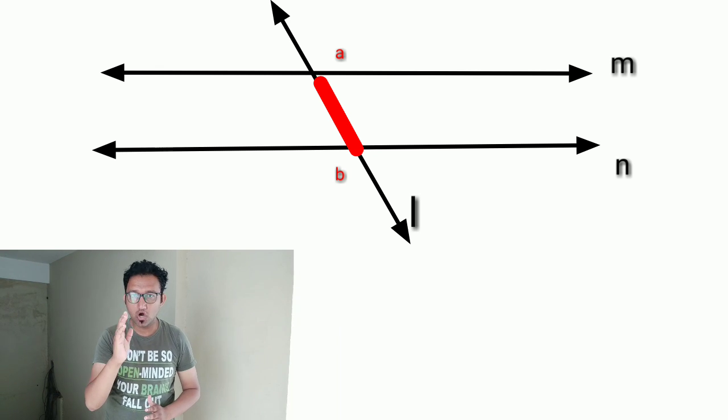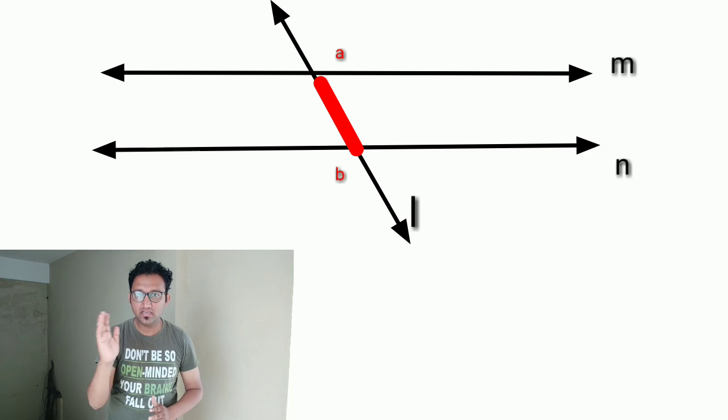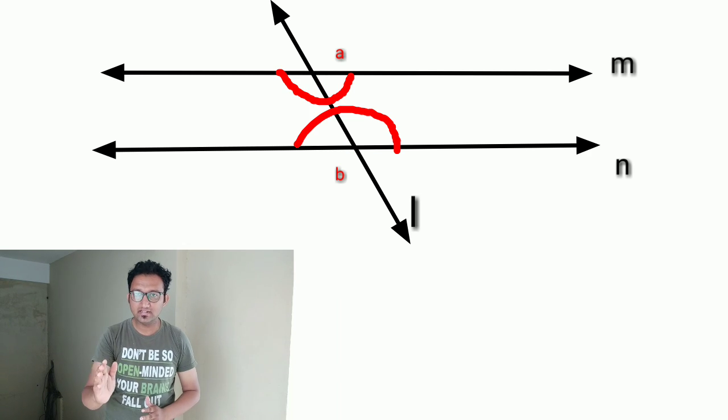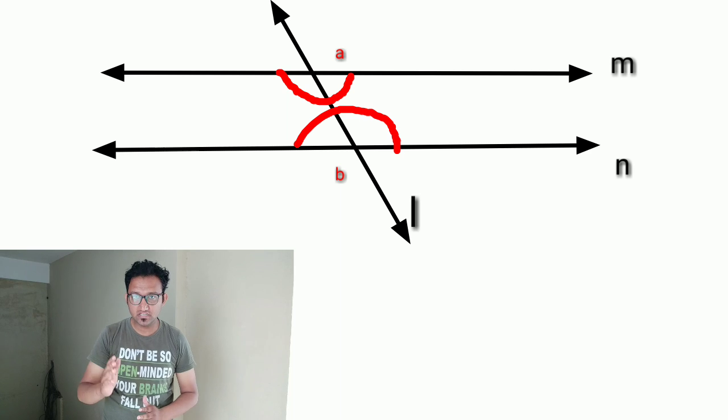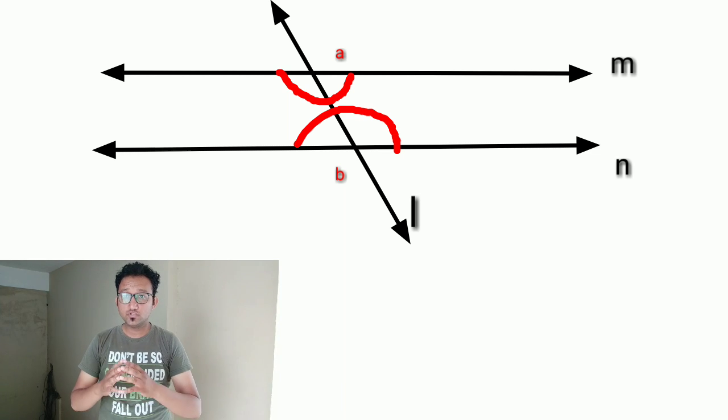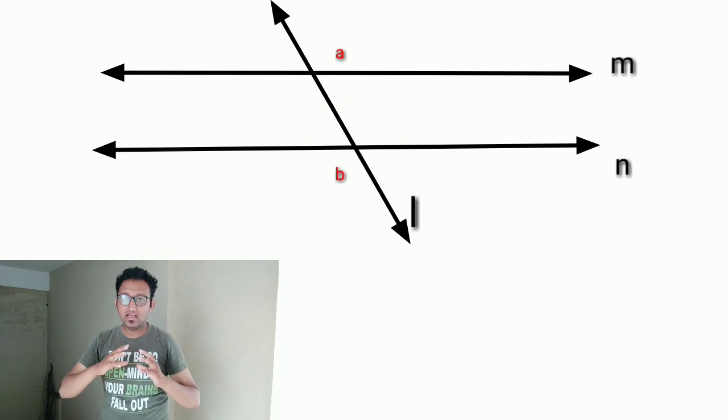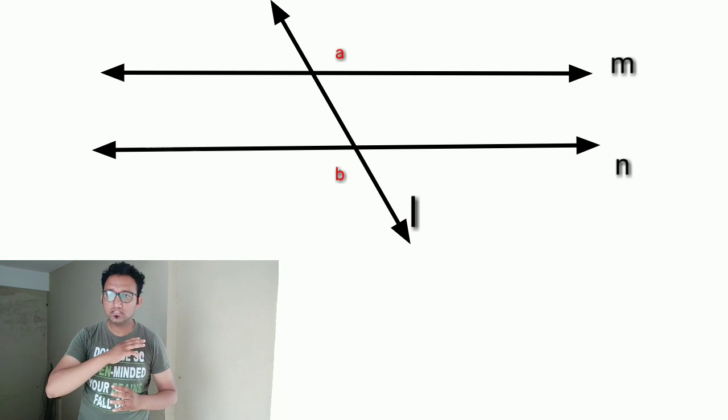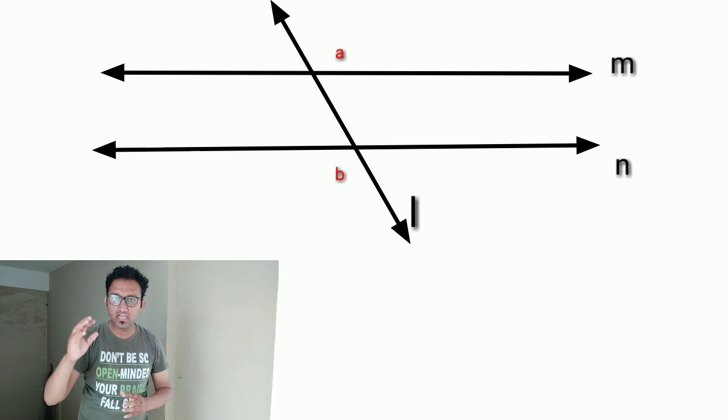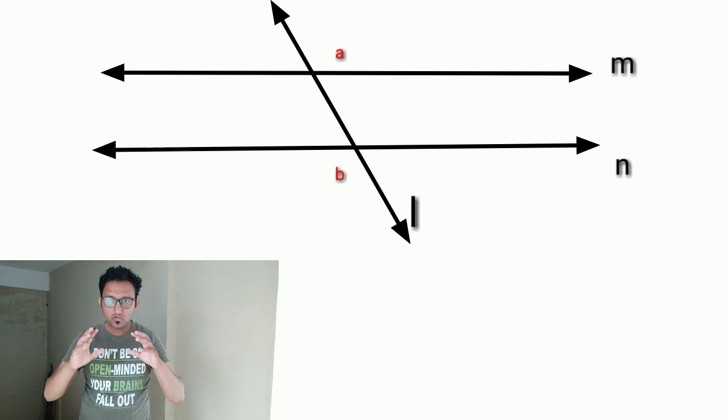As you can see, line L intersects line M and N at different points A and B. We can find total eight angles, right? So let's give them names.